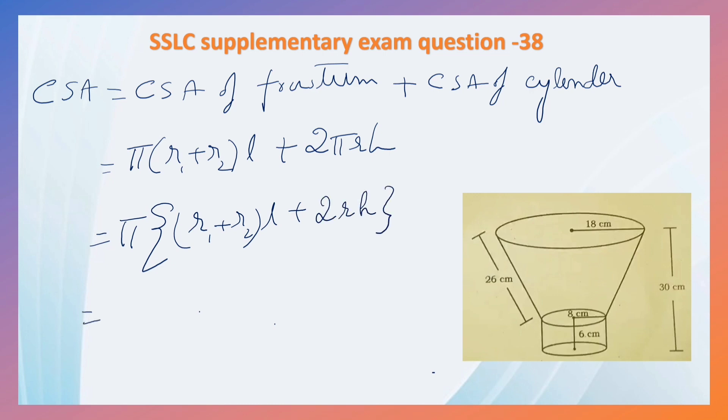Pi is 22 by 7 into R1 is 18, R2 is 8, 18 plus 8 is 26, into this is L. What is L? 26. Radius of the cylinder is 8, height of the cylinder is 6.